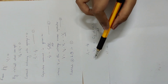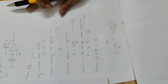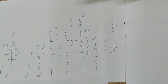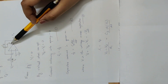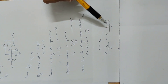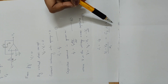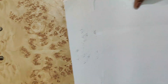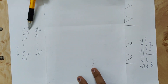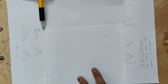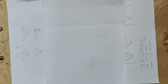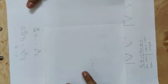Substituting: I1 is equal to Vi minus V2 divided by R1, and IF is equal to CF into d of minus VO by dt. With V2 equal to 0, we get the output voltage equation. So dVO by dt is equal to the derived expression.